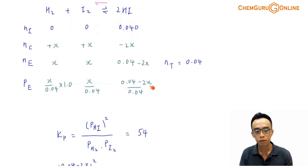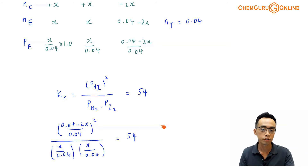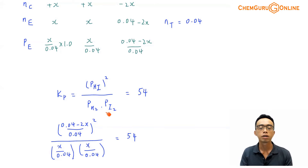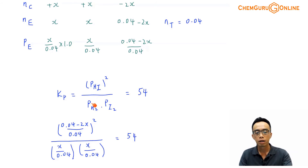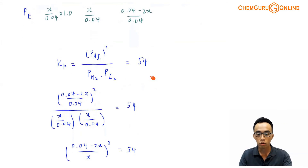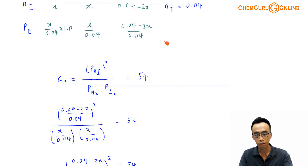We substitute these into the Kp expression. Kp equals the partial pressure of the products raised to the power of their coefficients, divided by the partial pressure of the reactants raised to their coefficients. So Kp = P(HI)² divided by P(H2)¹ × P(I2)¹, and this equals 54. Substituting our expressions: [(0.04 − 2X)/0.04]² divided by [X/0.04] × [X/0.04] = 54.